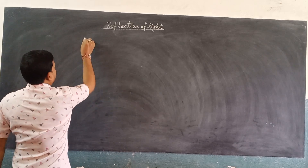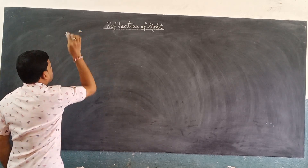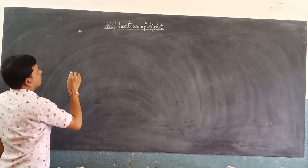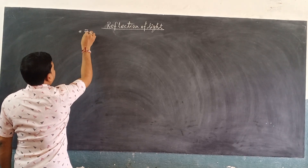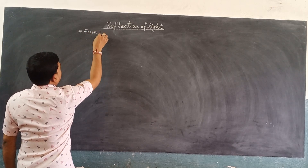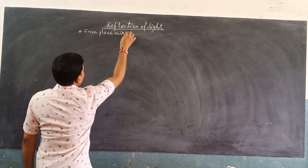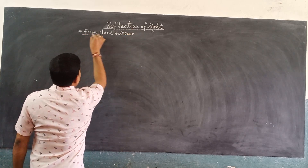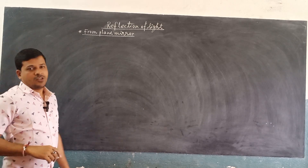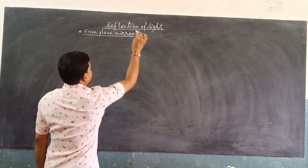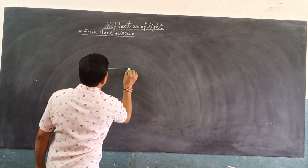Today, we will learn about the reflection of light from the smooth polished surface first — reflection of light from the plane mirror. A plane mirror is a smooth, well-polished, flat reflecting surface made of glass. So, what happens when light is incident on a plane mirror?